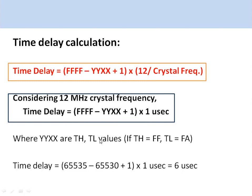For a 12 MHz crystal frequency, each tick is 1 microsecond. If TH and TL are loaded with the value corresponding to 65,530, the resulting time delay will be 6 microseconds.